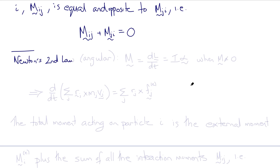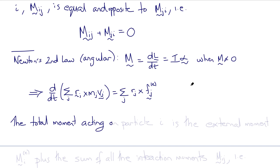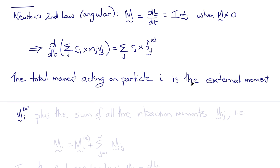We can expand Newton's second angular law, which states that the moment M equals the rate of change of angular momentum dL/dt, which equals the moment of inertia times the angular acceleration I times alpha. By substituting our earlier definition of angular momentum, the rate of change with respect to time of the sum over j of Rⱼ crossed with mⱼvⱼ equals the sum over j of Rⱼ times FⱼE, where FⱼE are the external forces acting on particle j with position vectors Rⱼ. The total moment acting on particle i is the external moment MᵢE plus the sum of all the interaction moments Mᵢⱼ from j equals one to N.